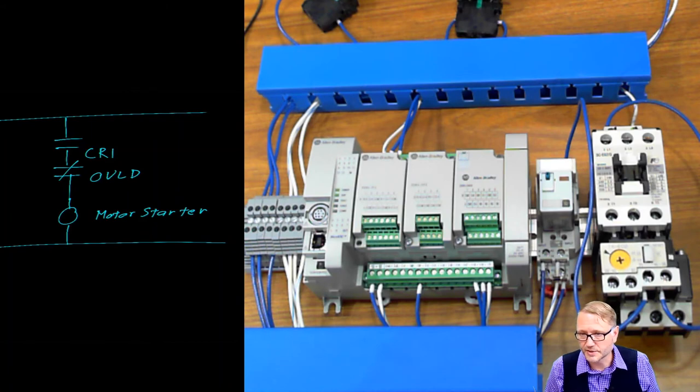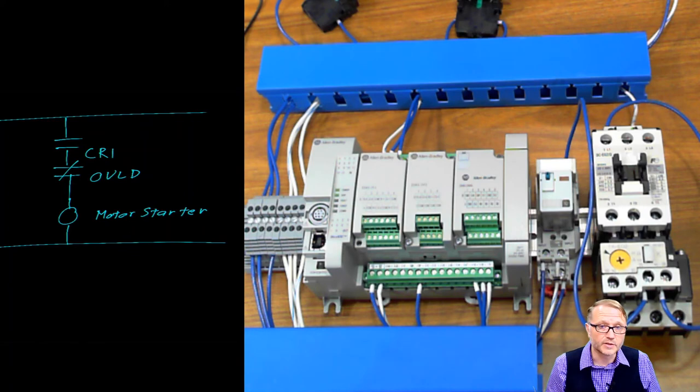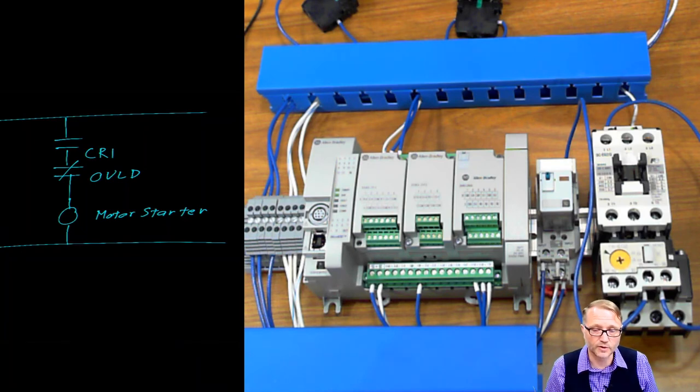There's any number of conditions that could cause this thermal overload to activate. The motor could be defective obviously. You could have a phase imbalance. Maybe one of your three phases doesn't have the right voltage or current on it which would cause the other two to overheat. You could have a brownout condition in which case the motor will pull more current. Let's see. What else? If you start and stop the motor too many times in a row it tends to heat up. So you've got to watch out for all those types of things. Or the motor could also be mechanically overloaded as well which would cause it to overheat.